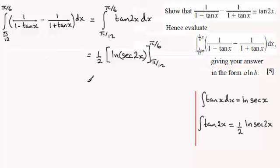And then it's just a question of substituting our limits in. So we've got the half at the front and we've got the natural log of the sec of 2 lots of pi upon 6. That's going to be the natural log of the sec of pi upon 3. And from that we subtract the natural log of the sec of 2 lots of pi upon 12, which is pi upon 6.